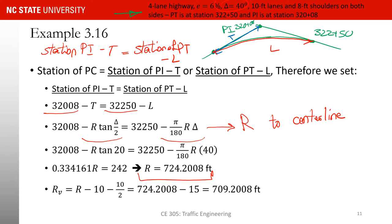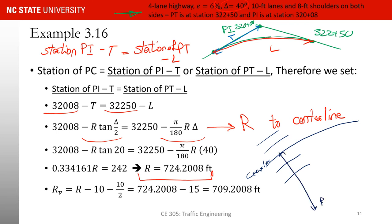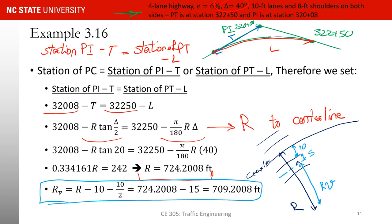Now I need R_v, the radius to the center line of the critical (innermost) lane. Drawing the cross section: the center line, then one lane of width 10, then the inner lane of width 10. R_v = R minus one full lane width minus half a lane width = 724.2 − 10 − 5 = 709.2 feet.